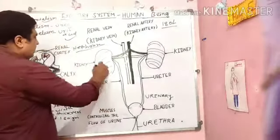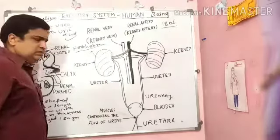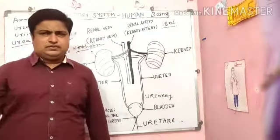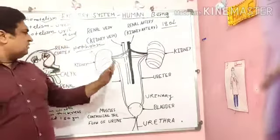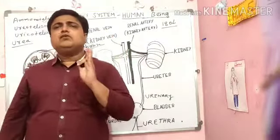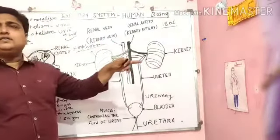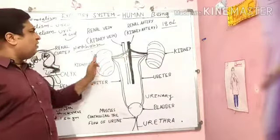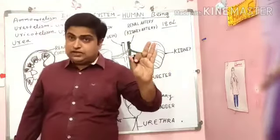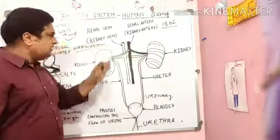Our kidney is made up of many nephrons — millions of nephrons — and these nephrons together form the kidney. They are responsible for the filtration of blood substances. The nephron is called the smallest unit of the excretory system.